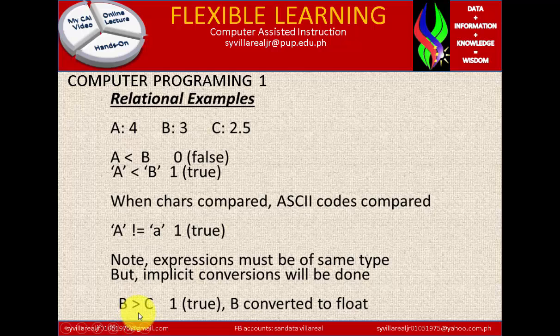Now next is b is greater than c. So b is 3 and 2.5 is c, and that is true. B is converted to float.